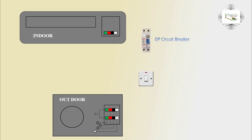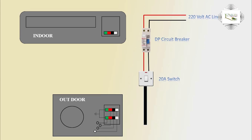DP Switch, 20 Ampere Switch. AC 220 Volt line, fast Circuit Breaker. DP Connection Input Output is Switch DP, Input Outgoing.